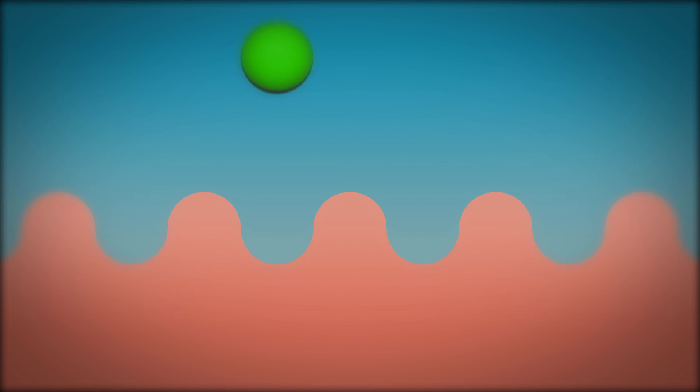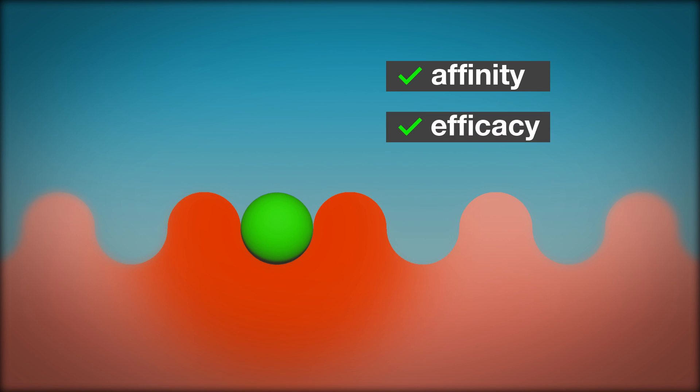The ability of an agonist to bind to a receptor is known as its affinity. The ability of an agonist to activate its receptor is known as its efficacy.